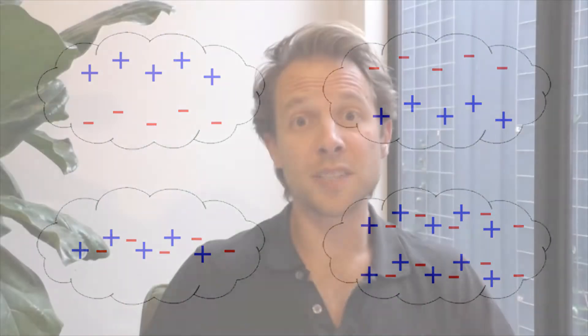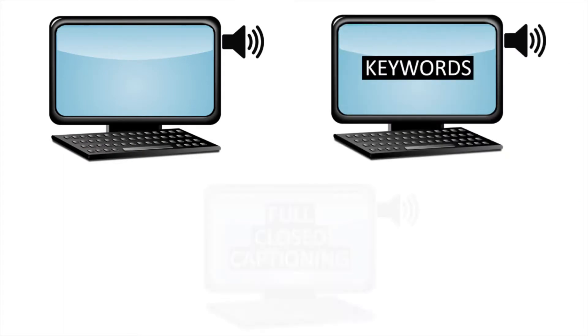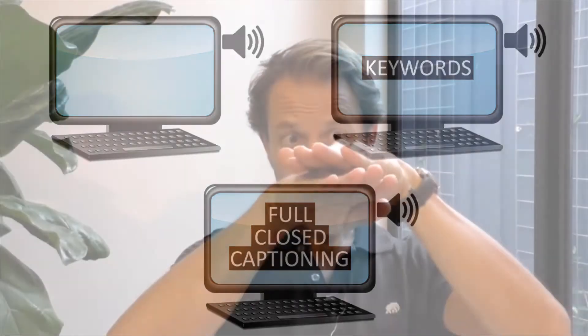In the first part of the experiment, three groups watched the video with a narrator who had the same accent as the listeners. Group one had just the narrator, group two had some keywords peppered in, and group three had full simultaneous captioning. For surface retention, all three groups performed significantly the same — everyone got the same basic facts.